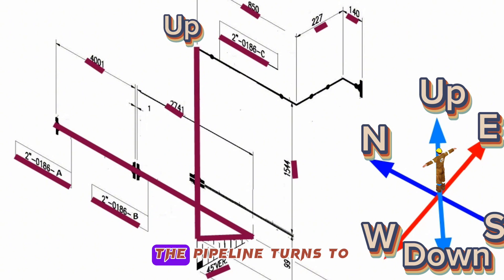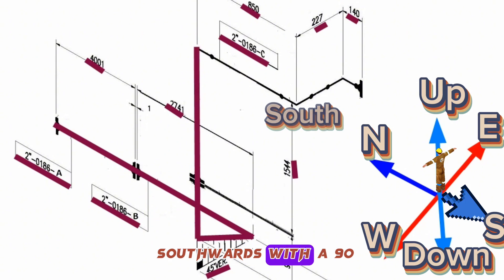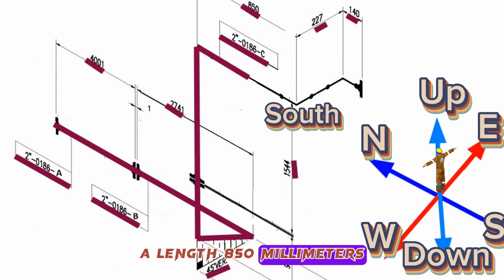In this point, the pipeline turns to southwards with a 90-degree elbow, a length 850 millimeters.